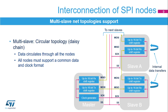Another multi-slave configuration is the circular topology, where the inputs and outputs of all the nodes are connected together in a closed serial chain. A common slave select signal is used for all the nodes as communication occurs at the same time. All nodes must have the same data and clock format configuration. Usually, the internal transmit and receive shift registers of a node are physically separated, so the internal data transfers have to be handled by software in this circular mode. The master node has to pace the internal data transfer accurately enough to remain synchronized with the other external data transfers.